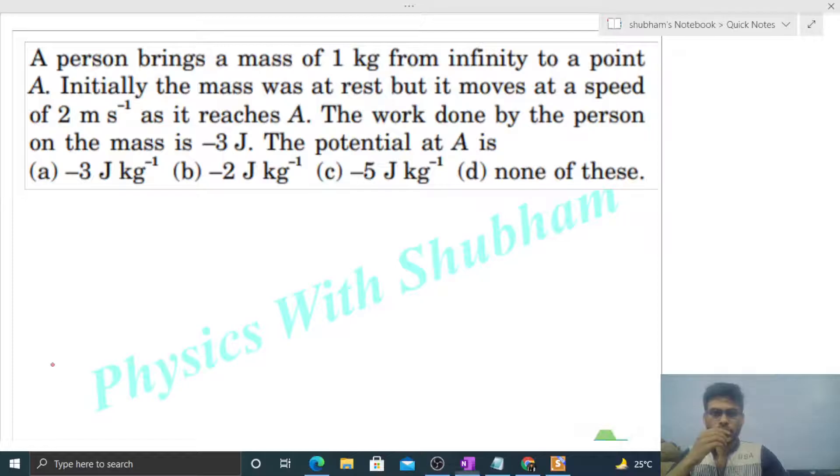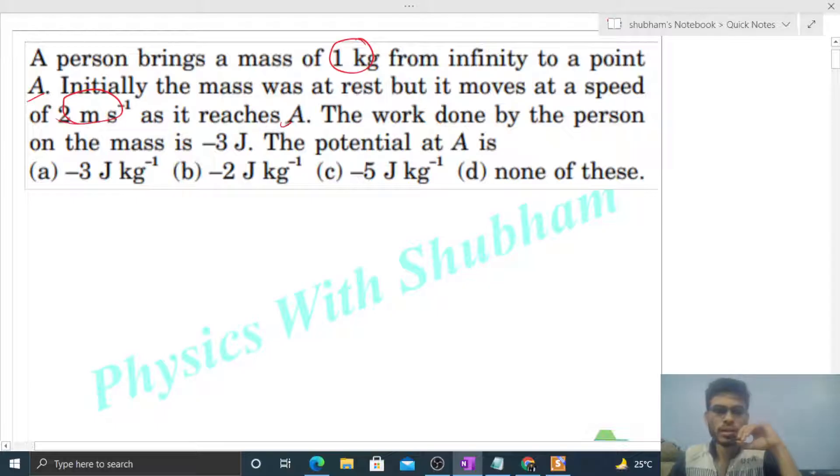Okay, hi everyone. Today let's discuss this interesting problem. It says a person brings a mass of 1 kilogram from infinity to a point A. Initially the mass was at rest, but it moves at a speed of 2 meters per second as it reaches A. The work done by the person on the mass is minus 3 joules.